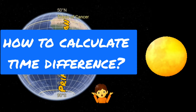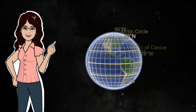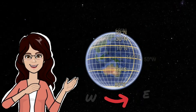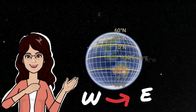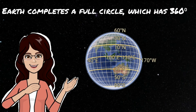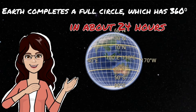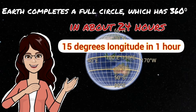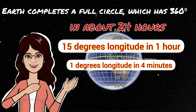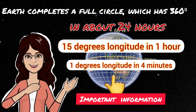Let me explain this in detail. Our earth rotates from west to east and completes a full circle of 360 degrees in about 24 hours. According to this, our earth rotates 15 degrees longitude in one hour and one degree longitude in four minutes. This information will help us calculate the time difference between two places.